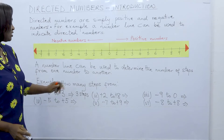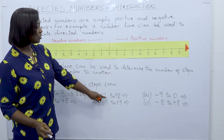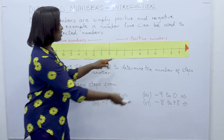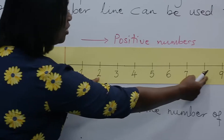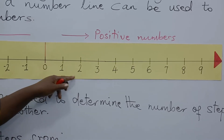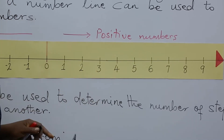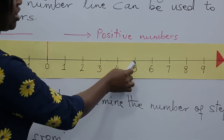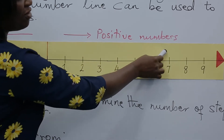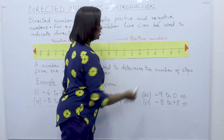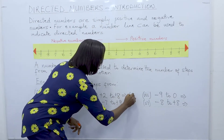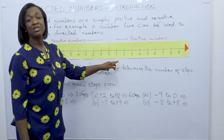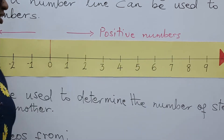How many steps from plus two to plus eight? This is plus two and that is plus eight — both are on the positive side. From two to eight, counting together: one, two, three, four, five, six. There are six steps from positive two to positive eight.